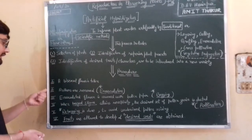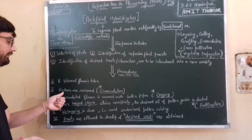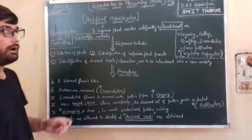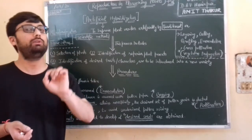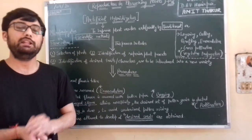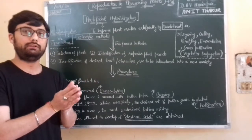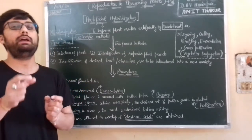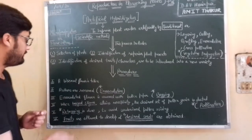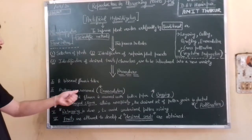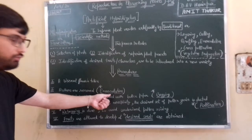In the second step, anthers are to be removed. And the removal of male reproductive part or anthers from that flower is known as emasculation. So anthers are to be removed, which is known as emasculation.